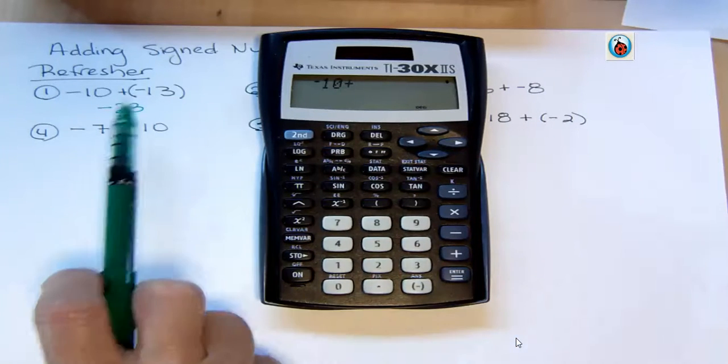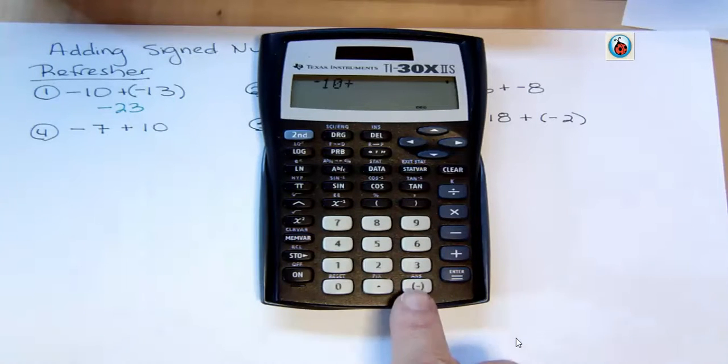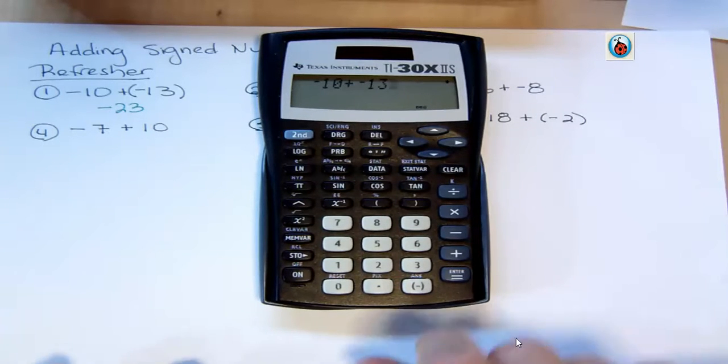If I put parentheses in there, that's fine, but I don't need it for this. And then I'm going to do a negative again, 13. Some calculators, you put the 10 in, then you hit the negative. You'll have to just play with your calculator and see. And then just hit enter, and it'll show you your answer, in this case, negative 23.